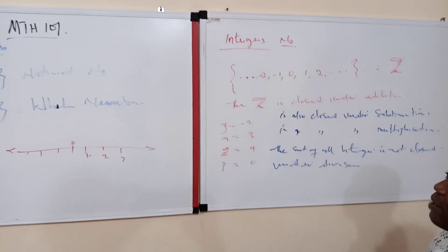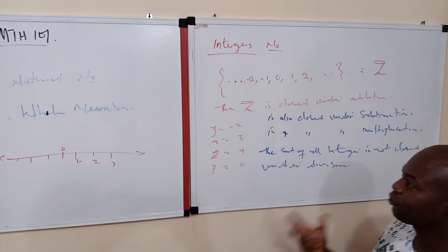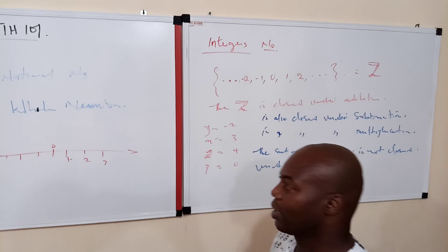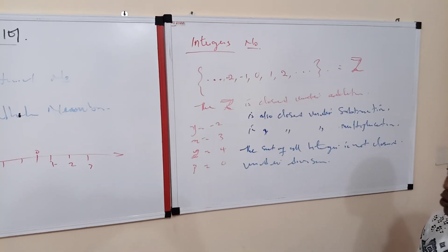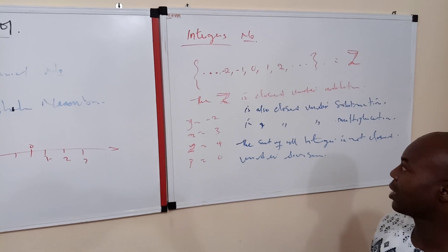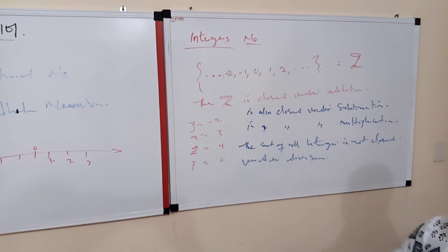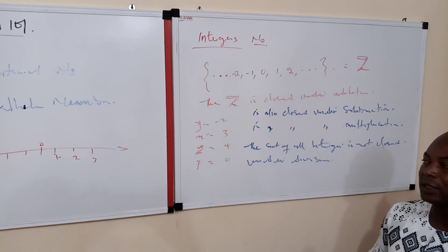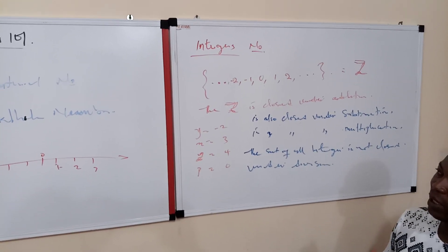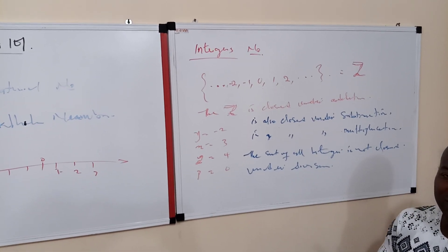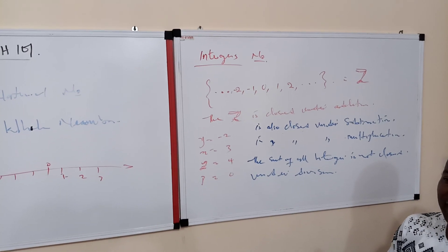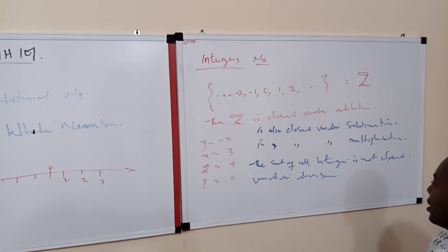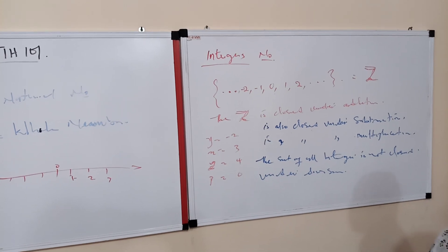So to summarize, for us to discuss the real number system, we have to consider natural numbers, whole numbers, integers, rational, and irrational numbers. In this class we covered whole numbers and integers. In our next class we will talk about rational and irrational numbers, which are also members of the real number set. Please subscribe so that you will get notifications whenever we have a new clip — it doesn't cost you anything and requires no financial details.